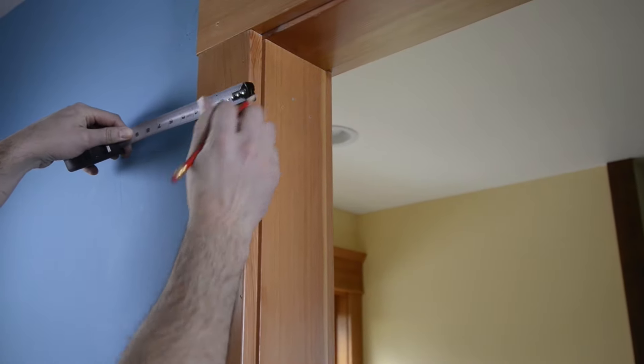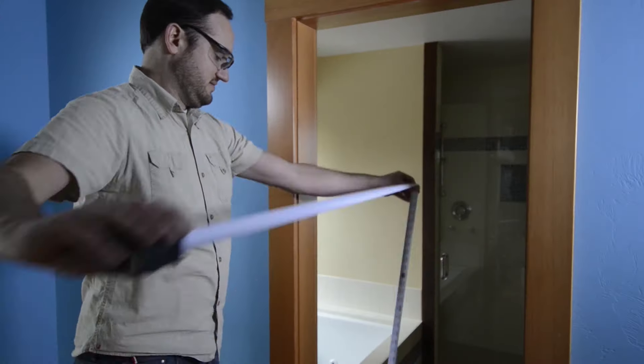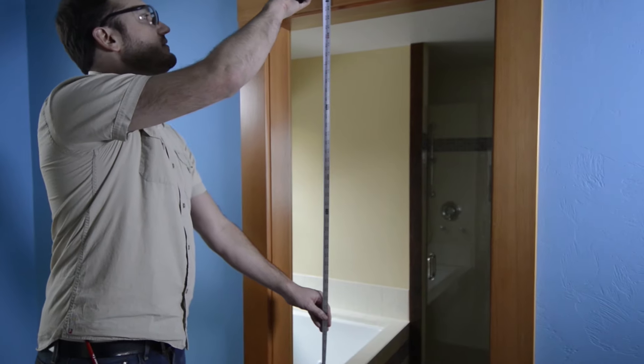After checking your doorway for proper structural support, take measurements to check for top-of-door clearance, door-to-wall clearance, and to locate the position of your initial mounting hole.